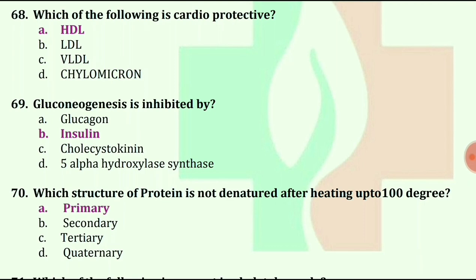Gluconeogenesis is inhibited by — options are glucagon, insulin, cholecystokinin, and 5-alpha-hydroxylase synthase. The answer is insulin. This question is from my previous LMR series of biochemistry. You can also watch that video.